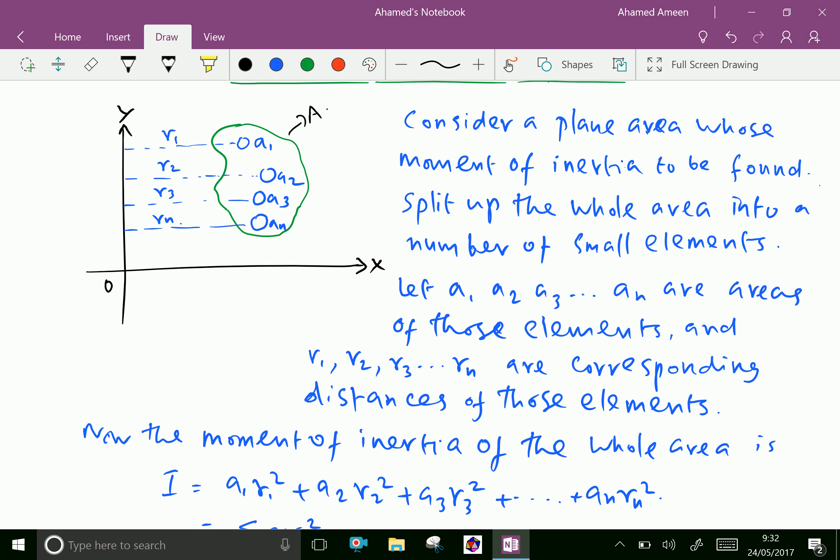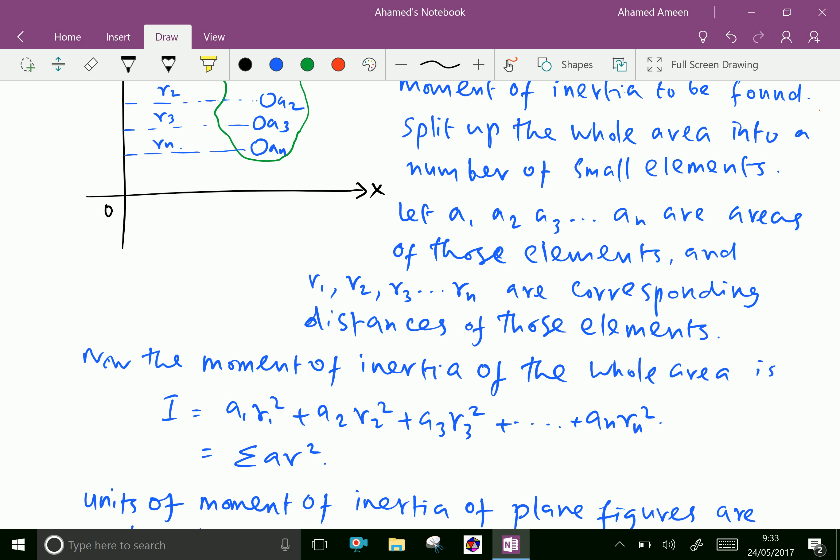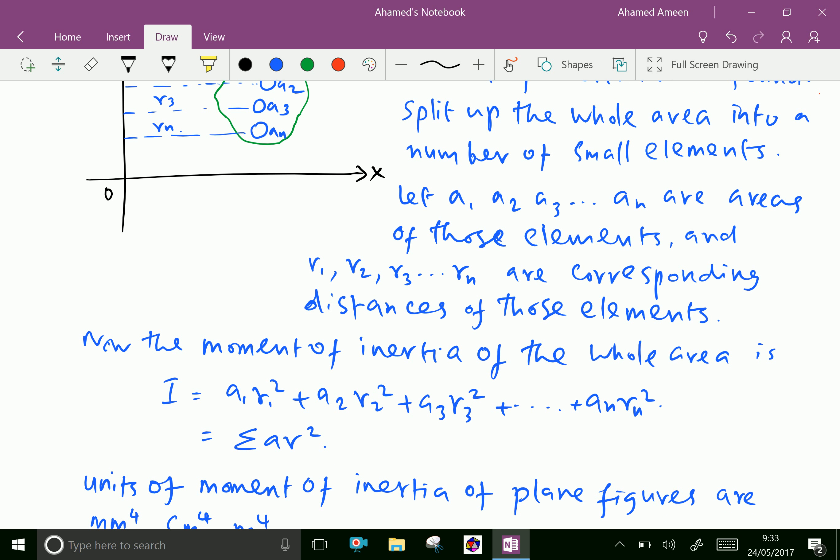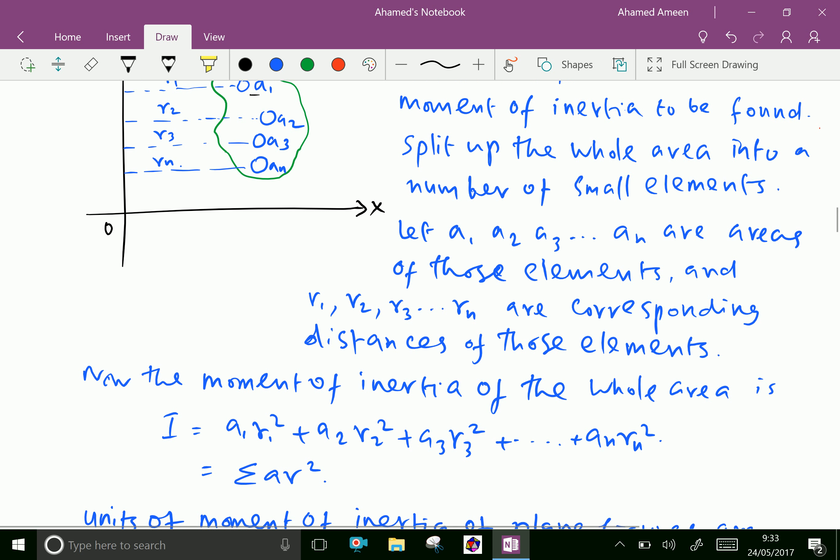Now, the Moment of Inertia of the whole area I is A1 into R1 squared, means this area of small area and multiplication of the square of the distance, plus A2 R2 squared plus A3 R3 squared plus dot dot dot An Rn squared.